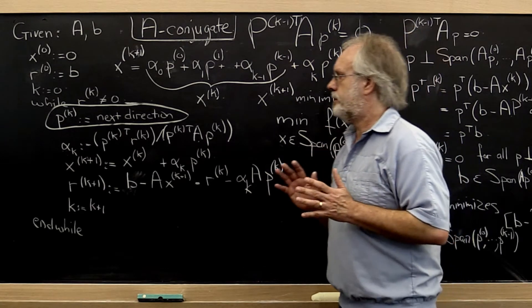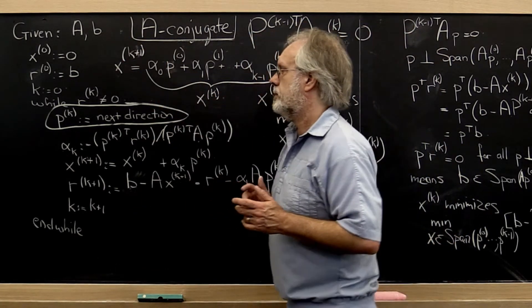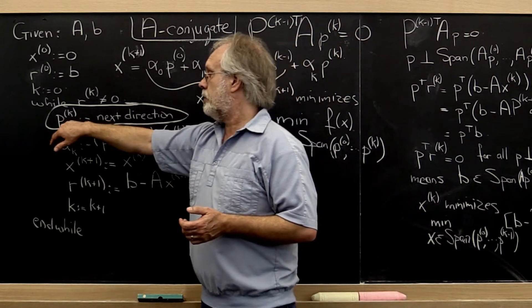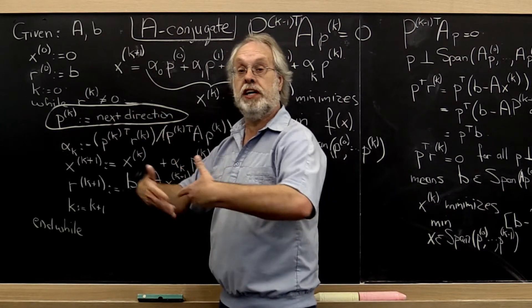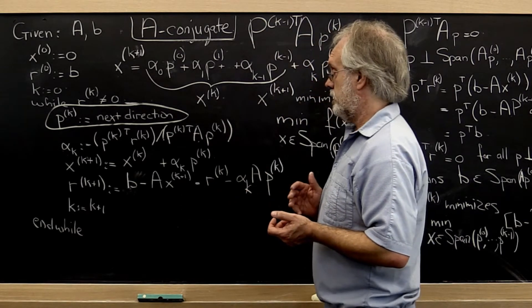Once again, let's review where we are now. We now have a descent method. We have concluded that we should pick our next search direction to be a conjugate after having picked all the previous search directions to be a conjugate with respect to each other.